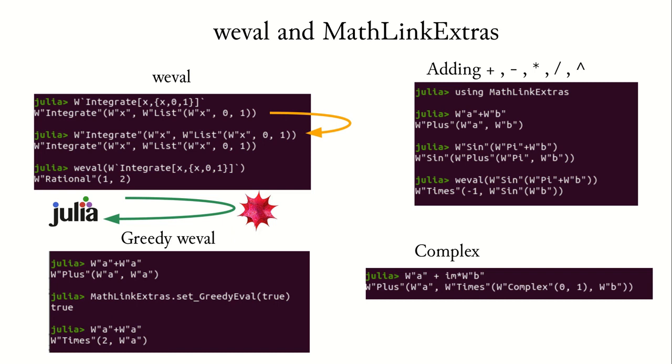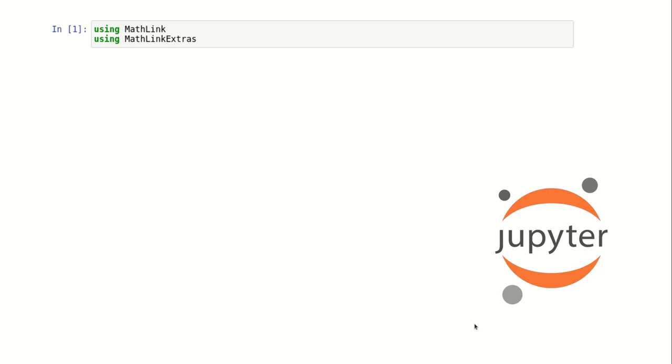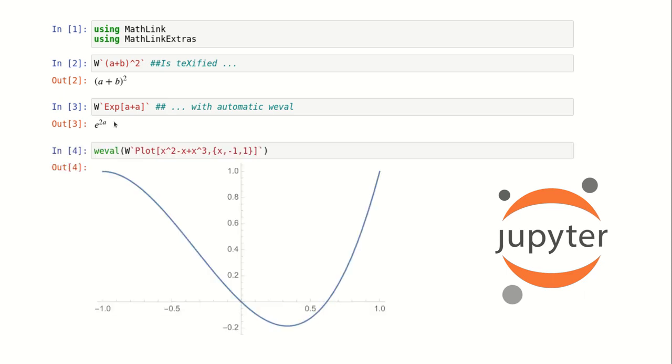MathLink Extras also allows support for complex numbers and rationals. Further, MathLink and MathLink Extras works really nicely with the Jupyter notebook. For instance, if I do W A plus B squared, this is actually techified so you get really pretty output, and it automatically evaluates before sending it to TeX. Further, even Mathematica graphs can be extracted. So if we do a plot of some function, this gets sent to Mathematica and back, and we get the corresponding PNG image in Jupyter.